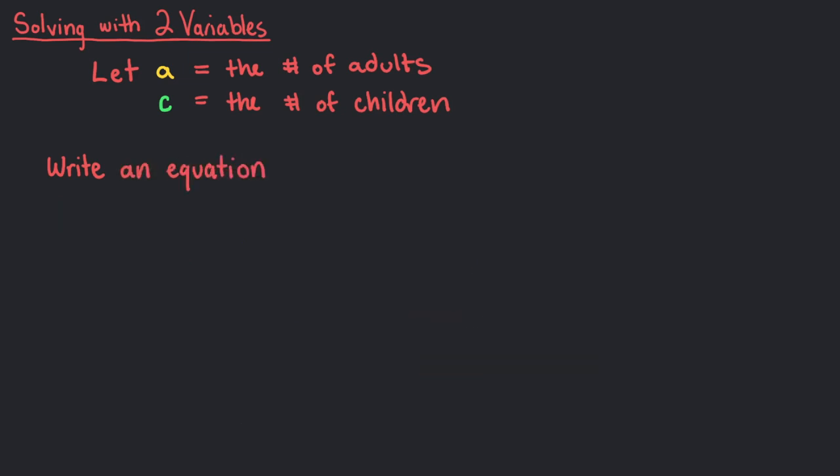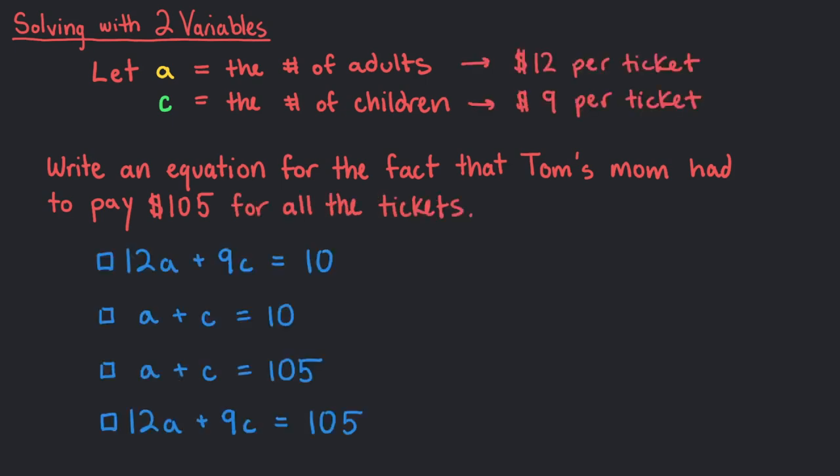Write an equation for the fact that Tom's mom had to pay $105 for all the tickets. Yes, if each adult ticket costs $12 and there are a adults, we need to multiply a $12 ticket for each of the a people.